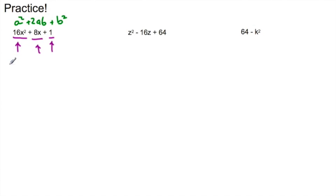So I can see 4 times 4, 16 is a square number. 1 times 1, 1 is a square number. But as I'm looking at the 8x, I need to see if it follows the pattern 2 times a times b. Is it 2 times a, which is 4, times b, which is 1? Or in this case I have my x. Does it follow that format? Yes it does.